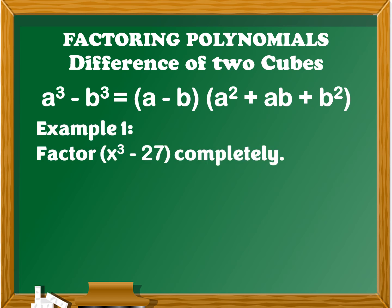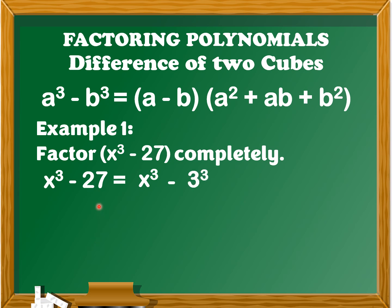Let's have example number one. Factor x cubed minus 27 completely. It is the same as the process in finding the factors of sum of two cubes. We're going to write x cubed minus 27 in the form of a cubed minus b cubed. So we have x cubed minus 3 cubed, since 27 is equal to 3 cubed.